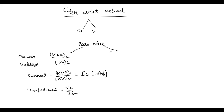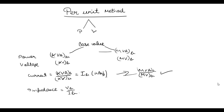Similarly, if the base value of power is in MVA and voltage is in kV, the base current value would again be in amperes, and you can similarly find the value of impedance.